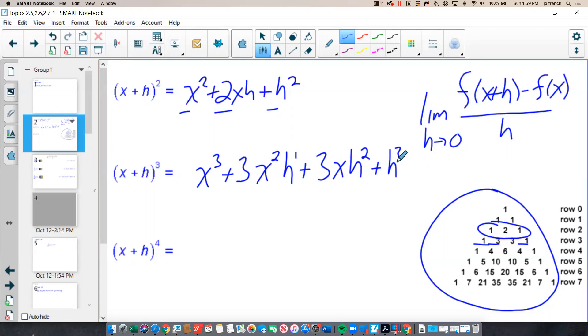Following that pattern here, for the x plus h to the 4th, I would have x to the 4th, plus 4x cubed h to the 1st, plus 6x squared h squared, plus 4x h cubed, plus h to the 4th. So, using the 4th row of Pascal's triangle.